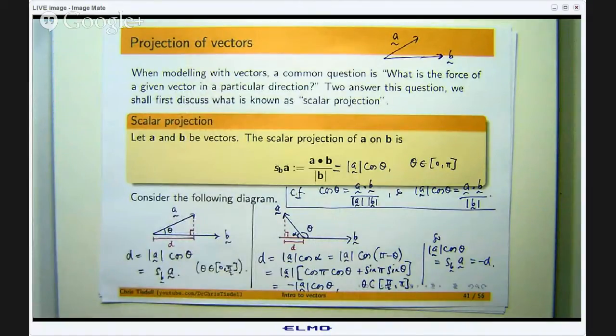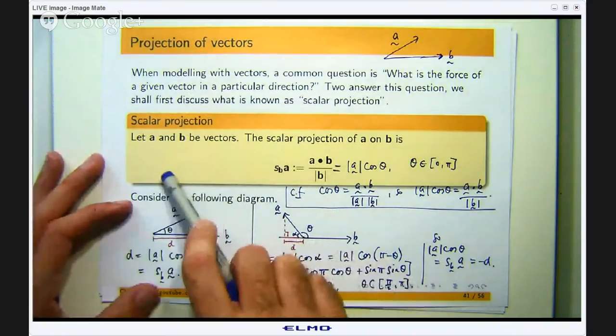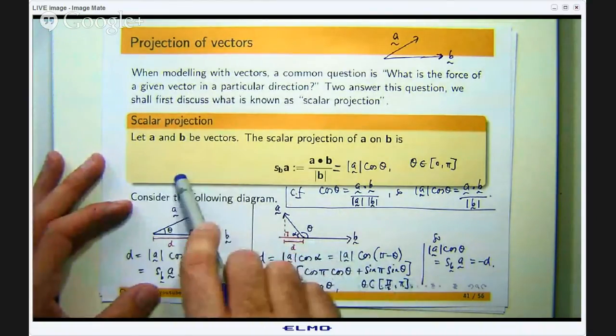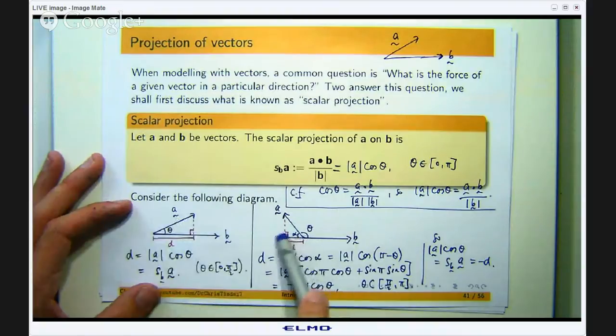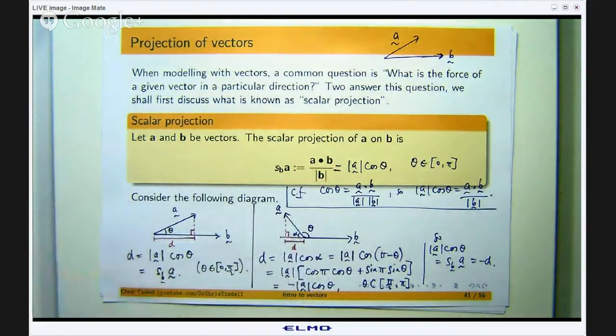Another way of thinking of this is imagine the sun is up here. This is like a shadow. This part here is like a shadow that the vector A casts on the vector B. That would be the shadow here. So that is the scalar projection.